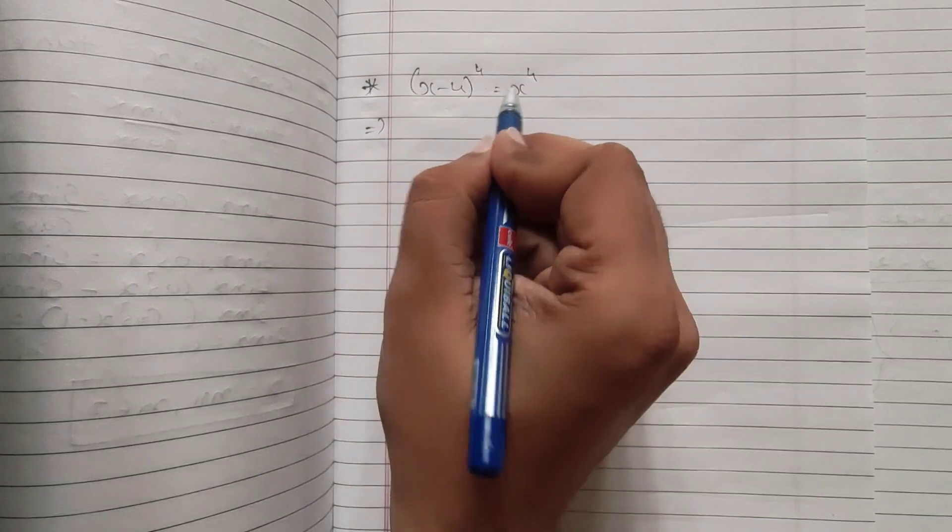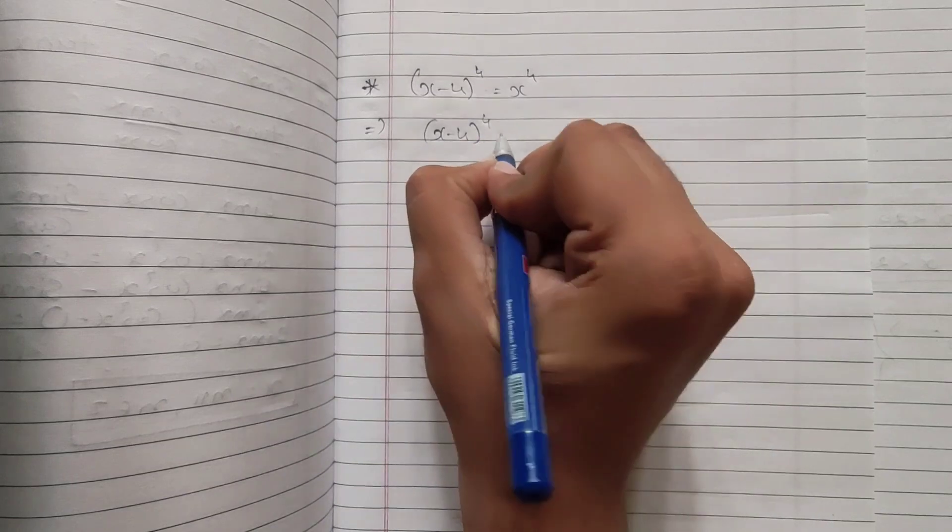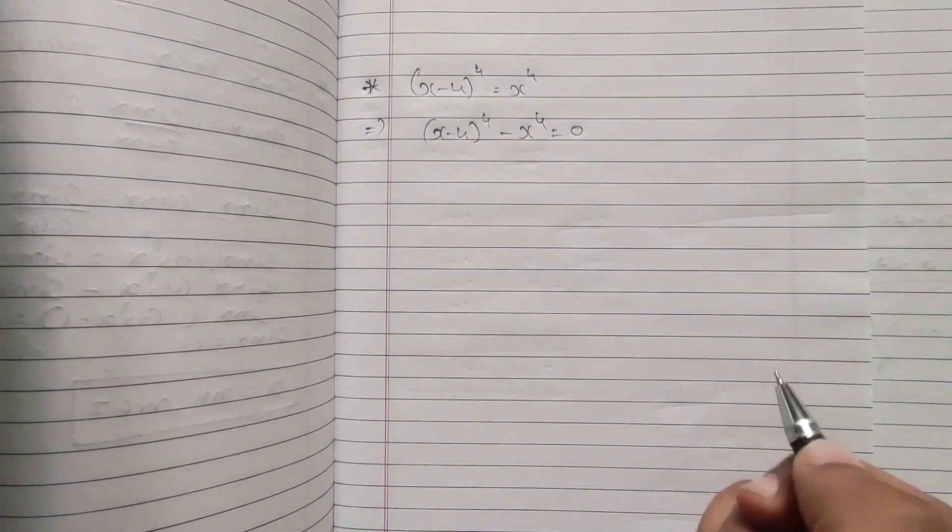First of all, I will bring x raised to 4 to the left hand side. So it will become (x-4)^4 - x^4 = 0.